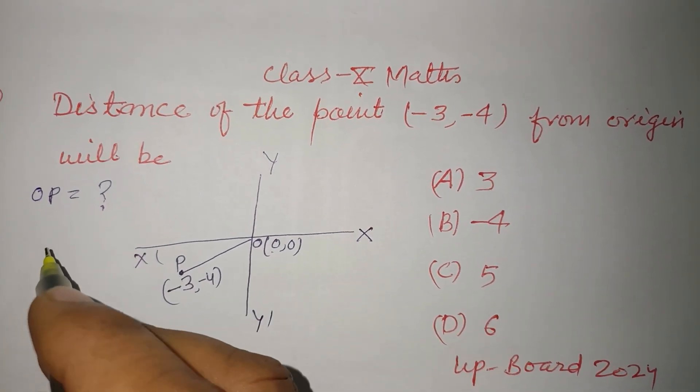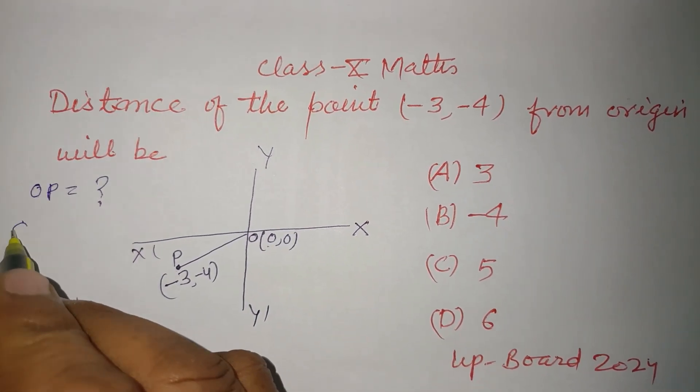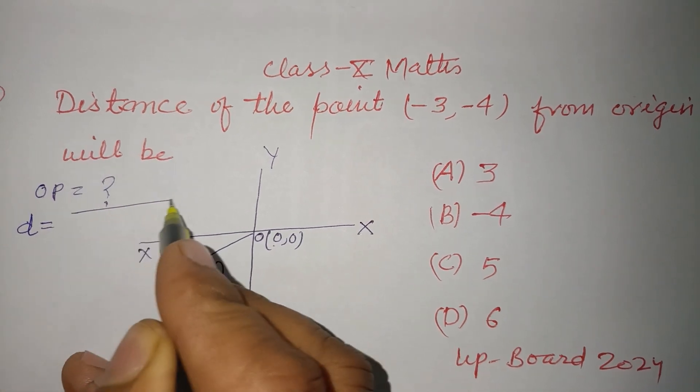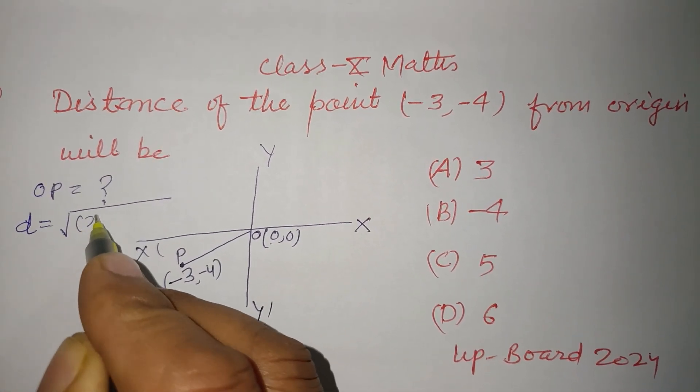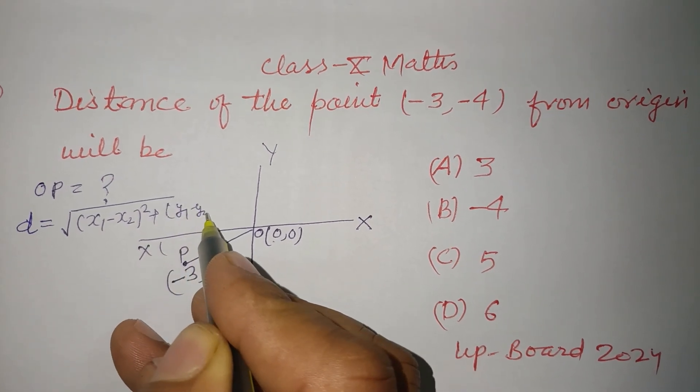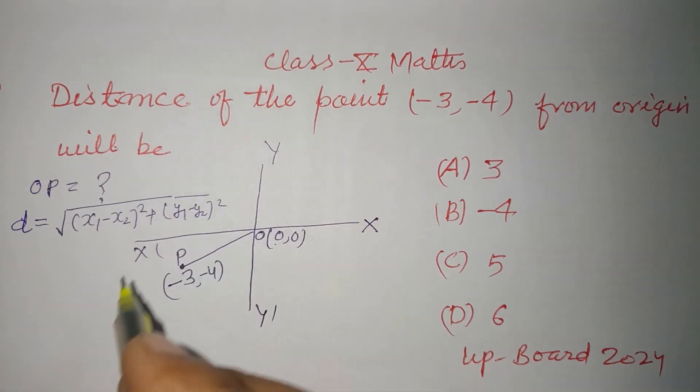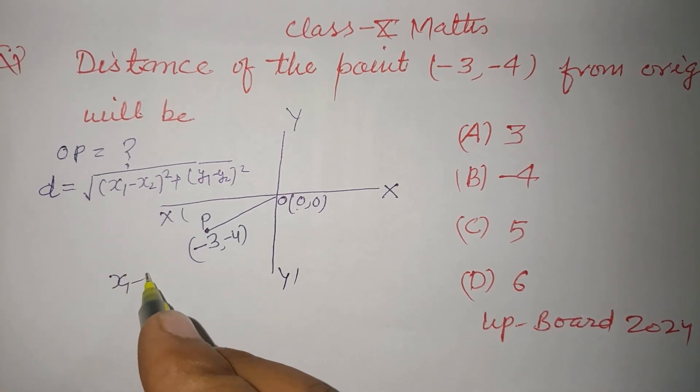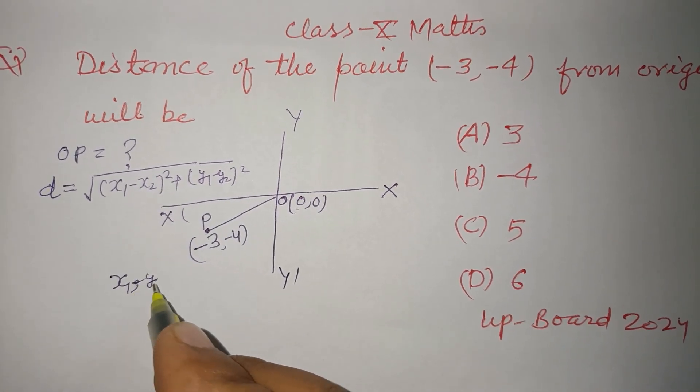Distance between two points - since you know that distance between two points D is given by the formula: square root of [(x₁ - x₂)² + (y₁ - y₂)²].